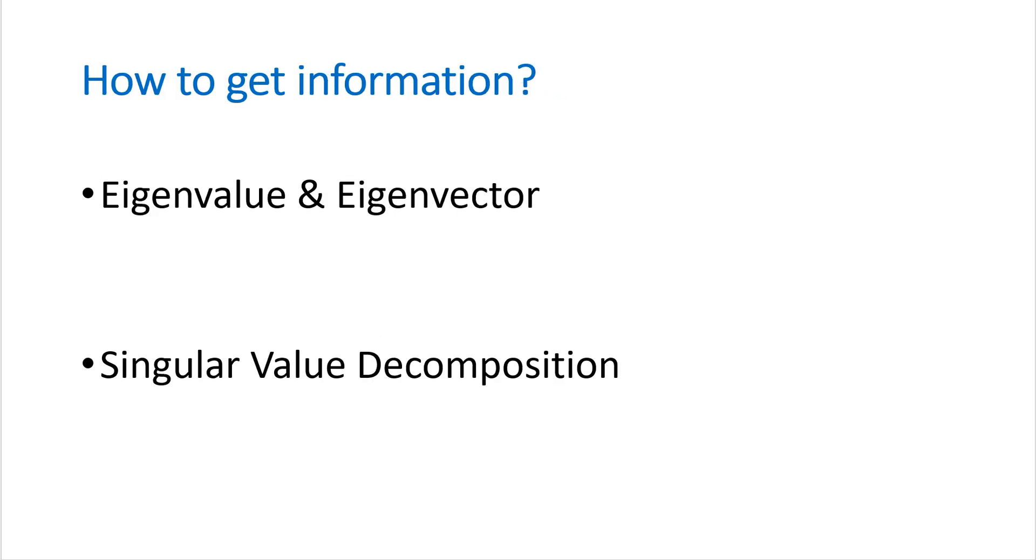How we can get information for multivariate data analysis? I think there are two important matrix decomposition for multivariate analysis. The first one is eigenvalue and eigenvectors. And the second one is singular value decomposition.